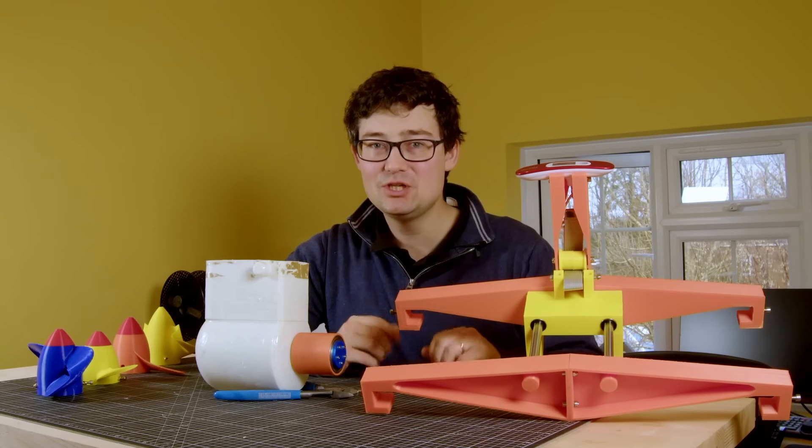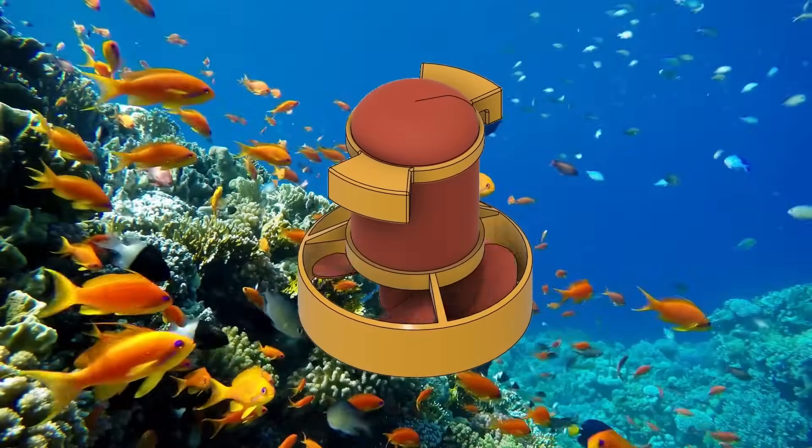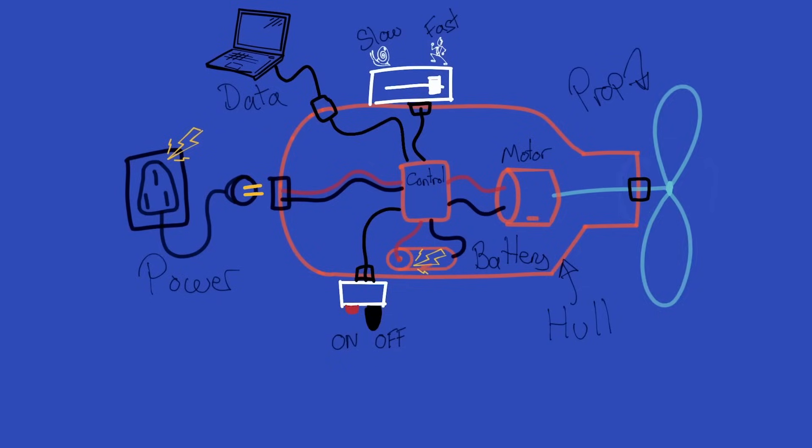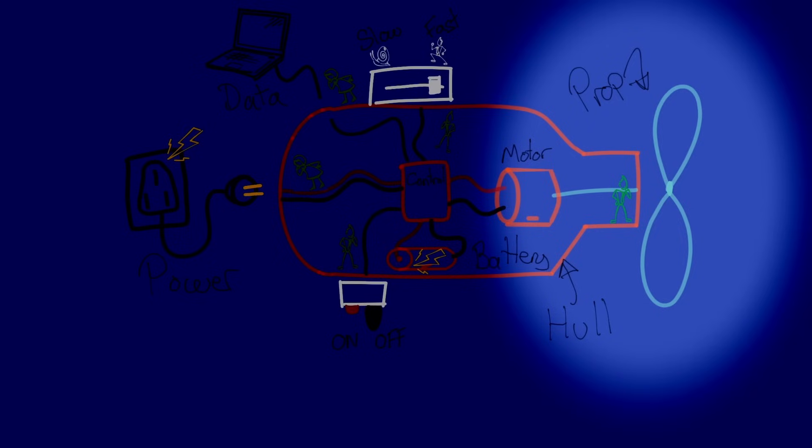Hi, thanks for tuning in to part two of the print-in-place C-Scooter build, where I'll be focusing on how to drive a propeller without any direct connection through the hull, dispensing with a need for any holes, seals or even a shaft.